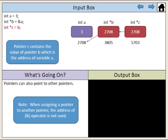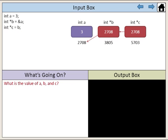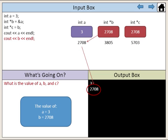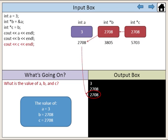Note: when assigning a pointer to another pointer, the address of operator is not used. Can you determine what is the value of a, b, and c? The value of a is 3. The value of b is 2708. The value of c is also 2708.